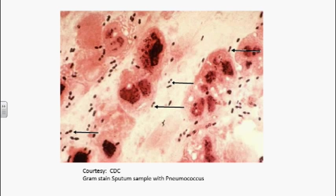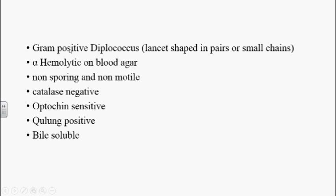This is a picture of the slide of Streptococcus pneumoniae organisms. We can see the diplococcal arrangement of these organisms. These are cocci — round-shaped, gram-positive organisms arranged in pairs. Streptococcus pneumoniae always appears in diplococci in nature. These are gram-positive diplococci arranged in lancet-shaped pairs or in small chains. These are alpha-hemolytic organisms on blood agar culture medium.